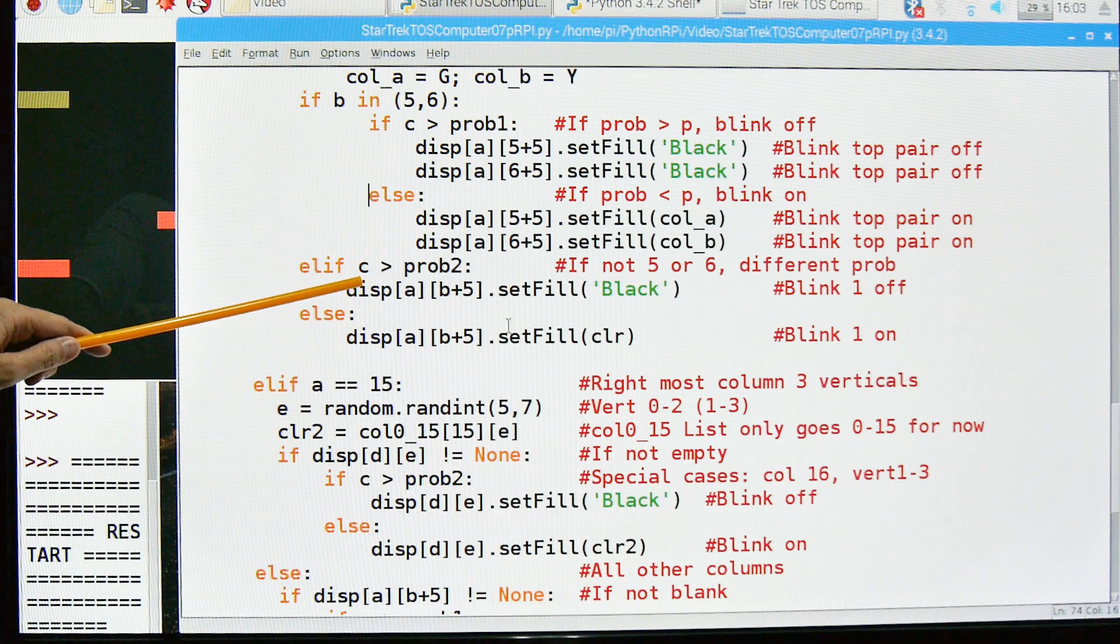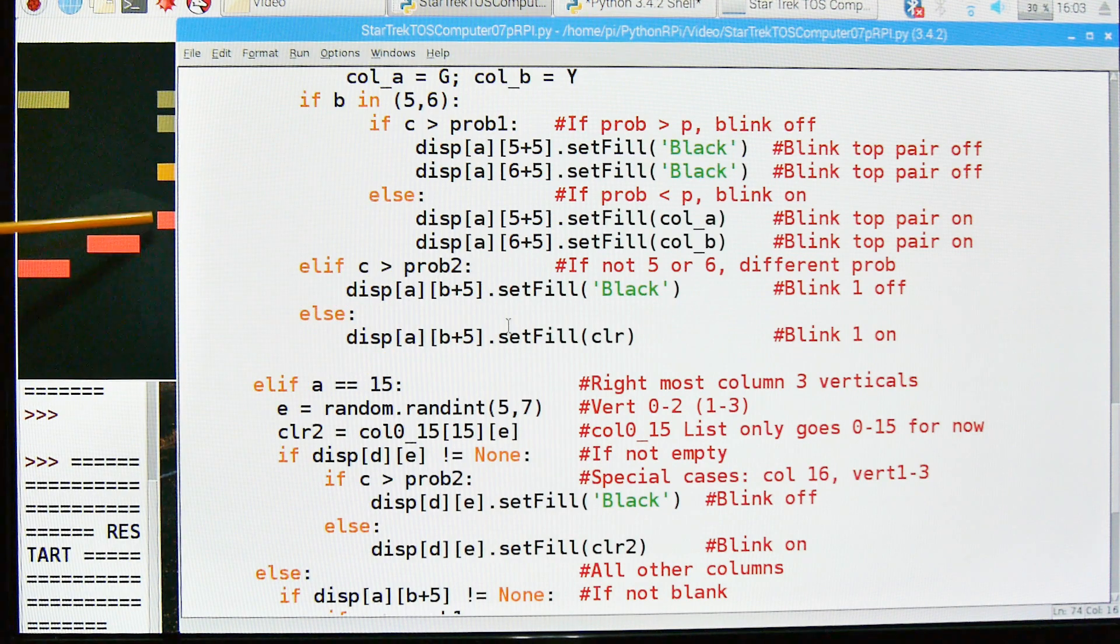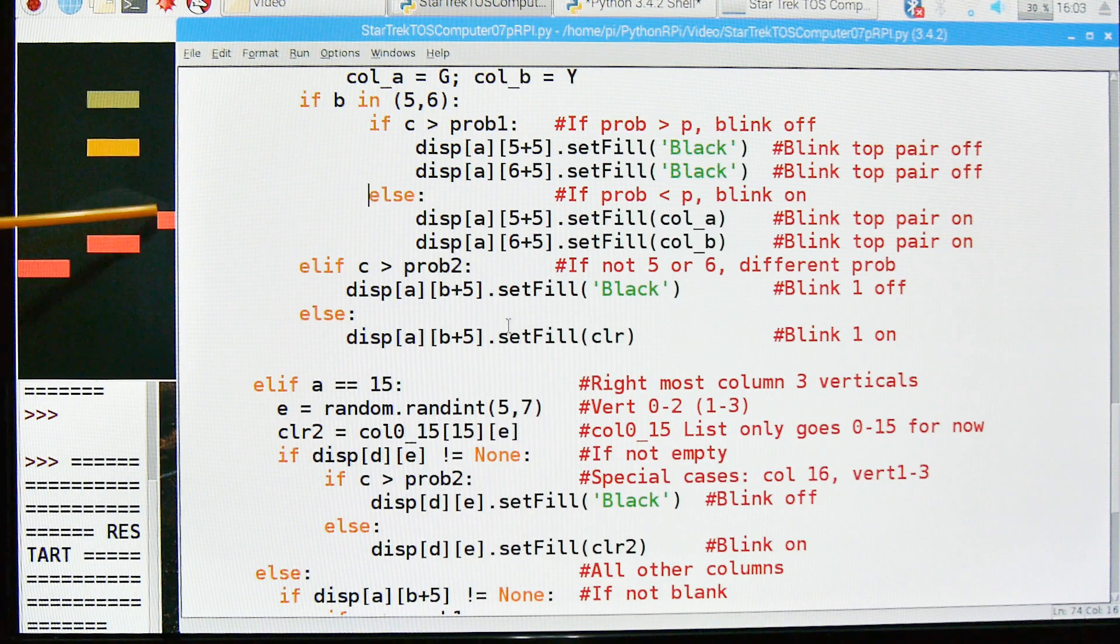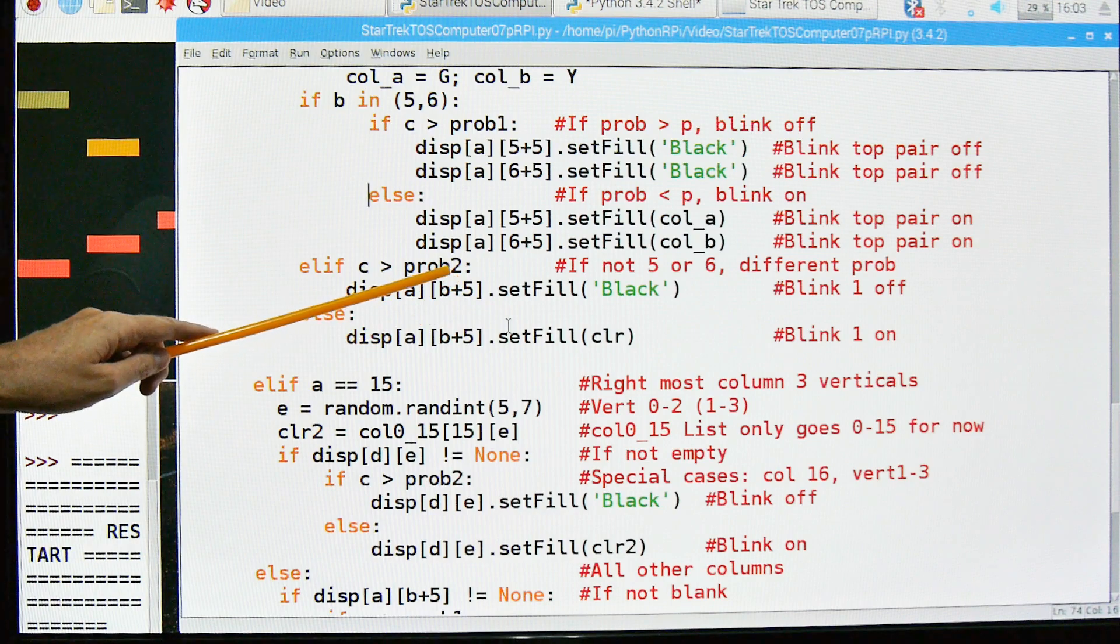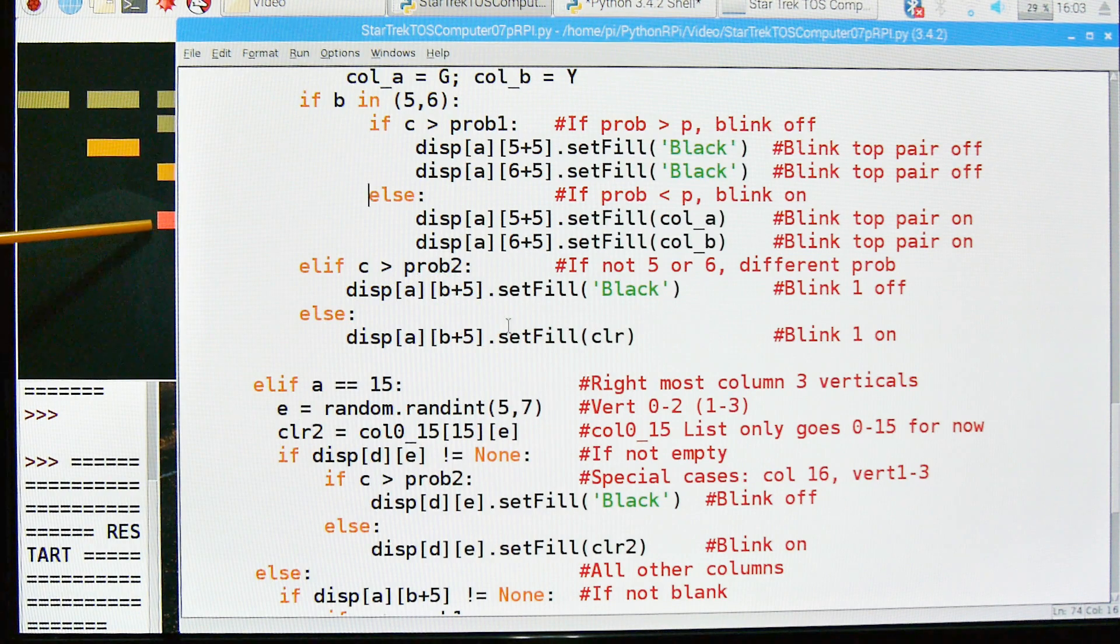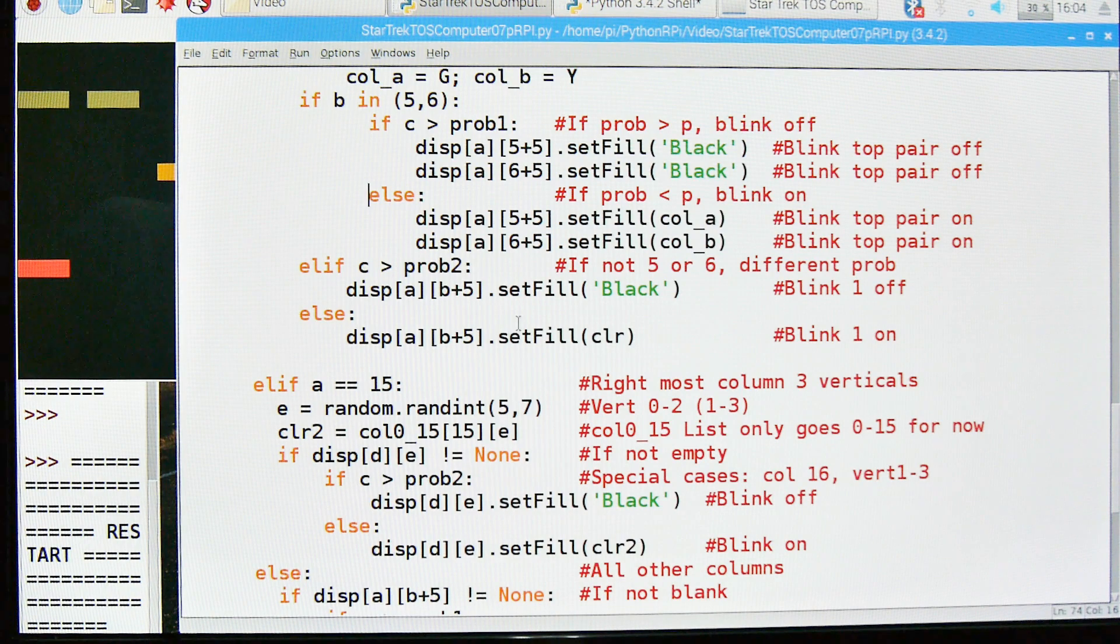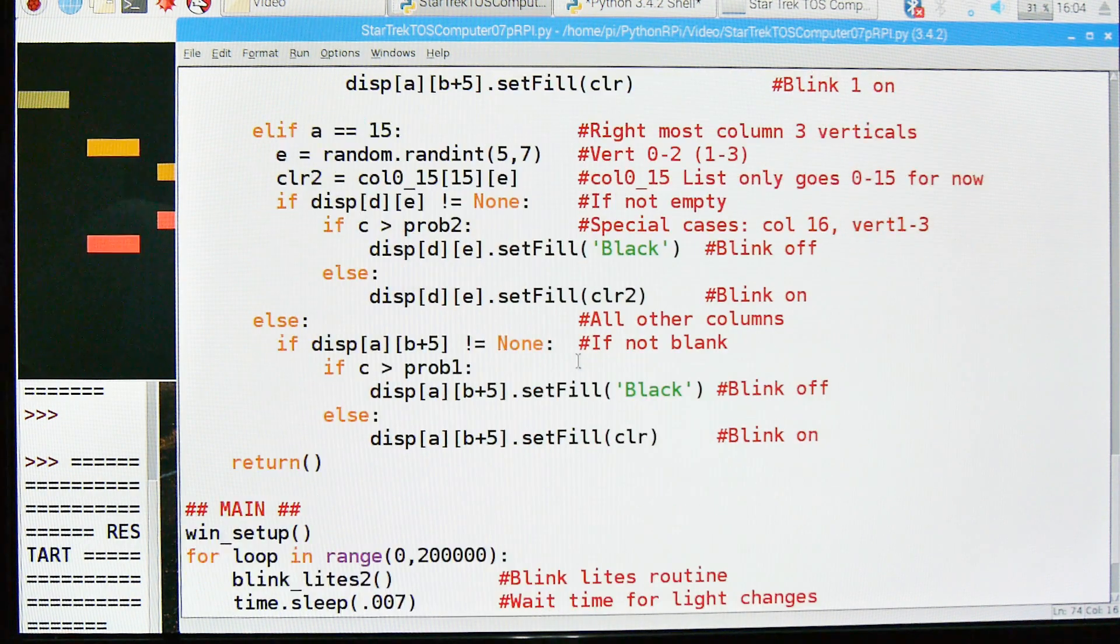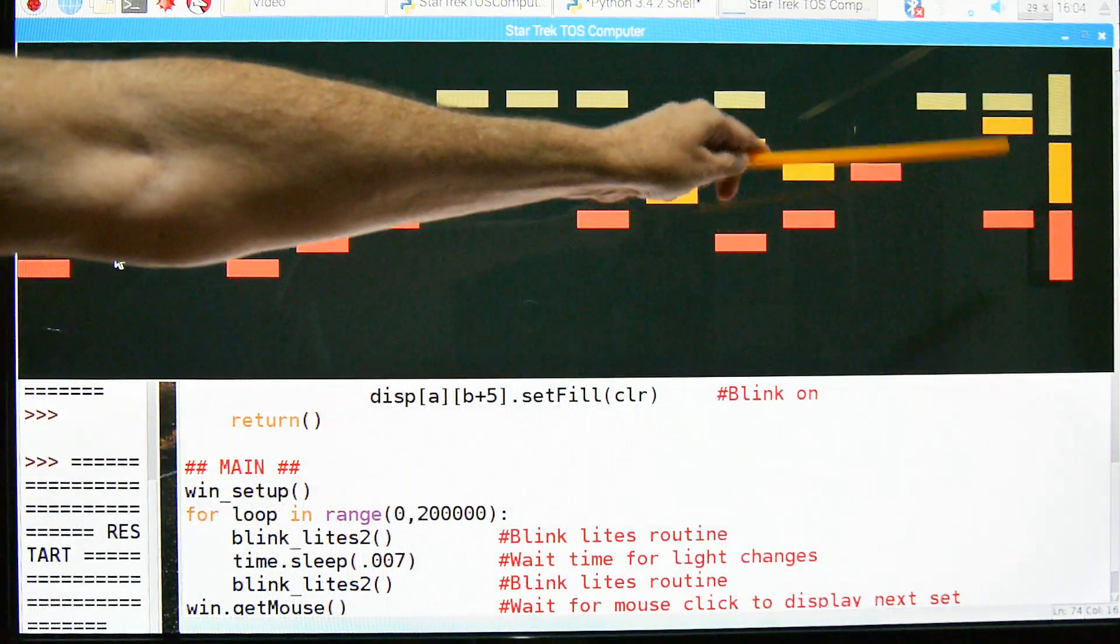So now I change the probability. This uses probability 2. And this is for all the other colors, these two colors here. So these two have a different probability than these two down here. And the probability is, I think I set it to 0.8. And it's either black or the original color. And you can see those here and here, peeking on the side, doing their thing. So the yellow and orange. And you can see clearly that they're not flashing at the same rate.